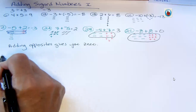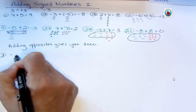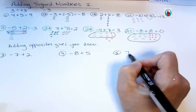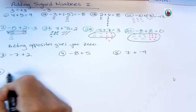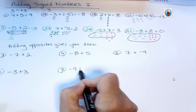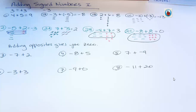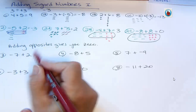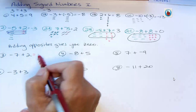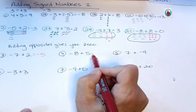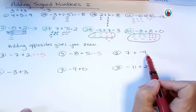Here's a bunch of problems for you to try. Number three: negative seven plus two. Four: negative eight plus five. Five: seven plus negative nine. Six: negative three plus three. Number seven: negative nine plus zero. Number eight: negative eleven plus twenty. You should try those on your own and then come back. Ask yourself: do I have more positives or more negatives? For number three you have more negatives by five; number four, more negatives by three; number five, more negatives by two.